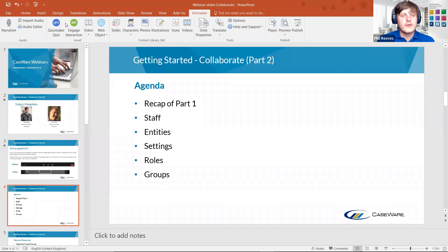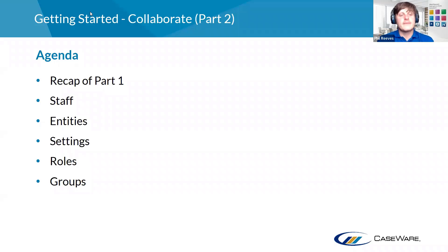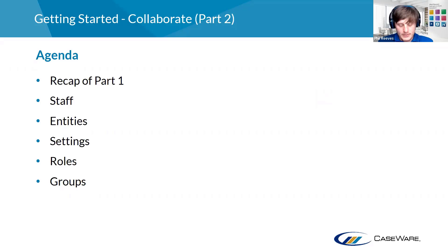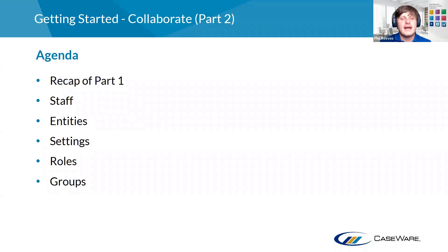Just to quickly recap: we've gone through staff — how we can create and import staff, how we can assign particular roles and assign them to certain groups within Caseware Cloud, how we can do the same sort of thing with entities and assign those to specific groups, and how we can control the access rights for users within that specific group. If anyone has any questions at all, please feel free to drop them into the chat, but I'll pass you back to my colleague Tom for questions and a roundup.